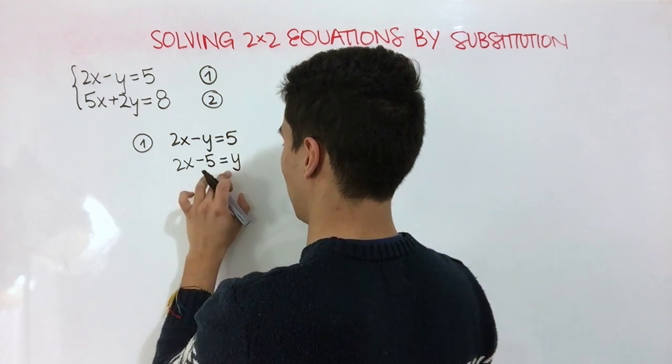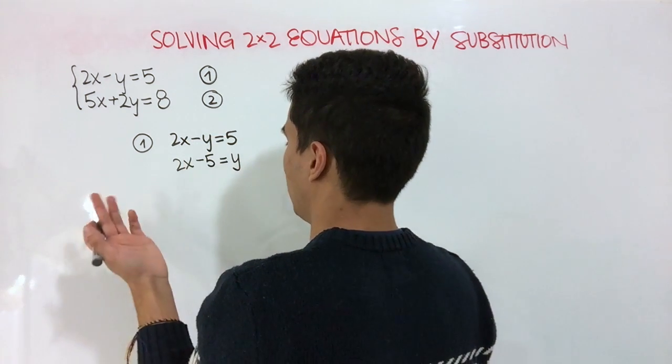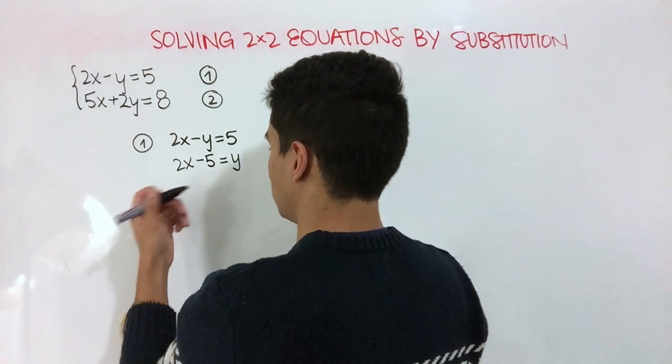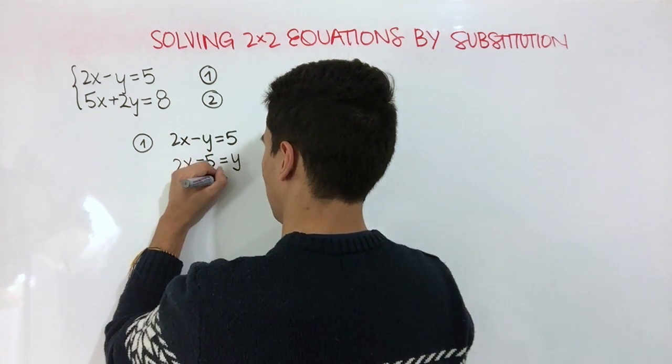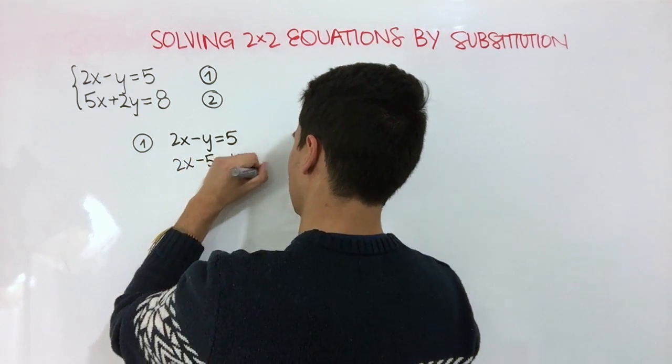And just rearranging so we have our isolated variable on the left, we're going to end up with y is equal to 2x minus 5.